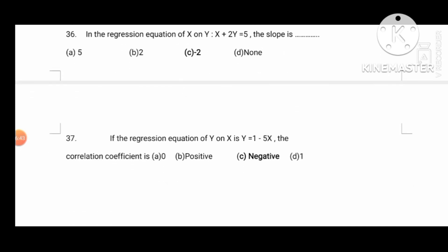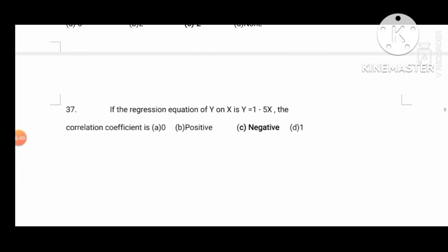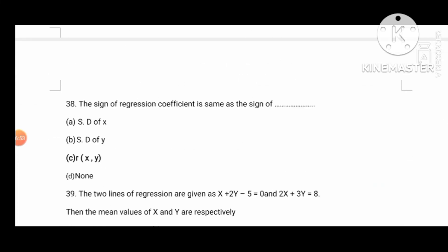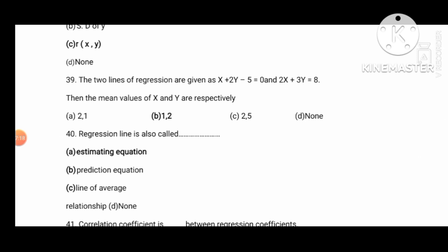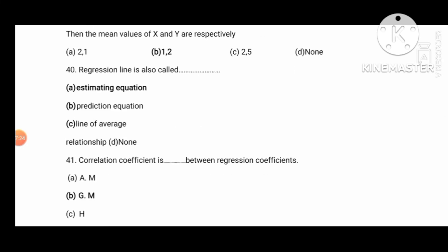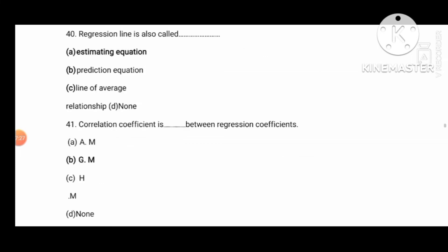The regression equation of X on Y is: Y equal to 1 minus 5X — that slope is negative. The sign of the regression coefficient is the same as R of X, Y. The two lines of regression are given as X plus 2Y minus Y equal to 0; the mean values of X and Y are respectively 1 and 2. The regression line is also called the estimating equation. The correlation coefficient lies between the two regression coefficients.